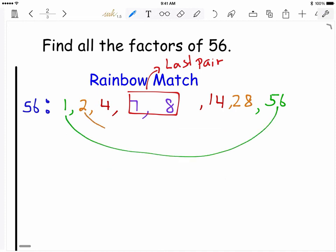Now this method is called the rainbow match because when you check your work by matching the factor pairs together, you should see a rainbow. To summarize this lesson, here are the steps to find all the factors of a number.